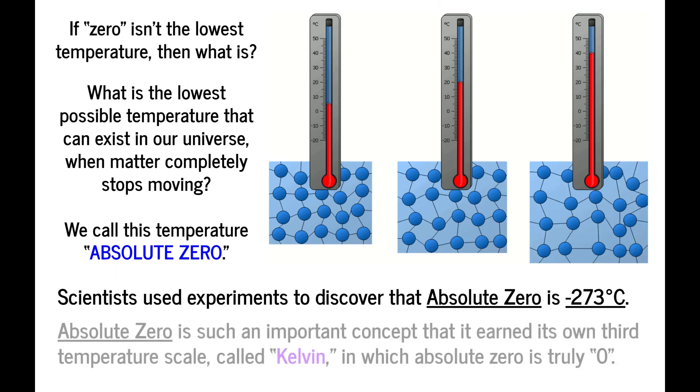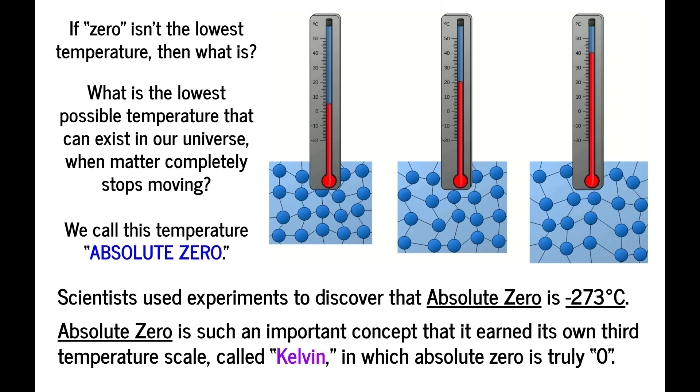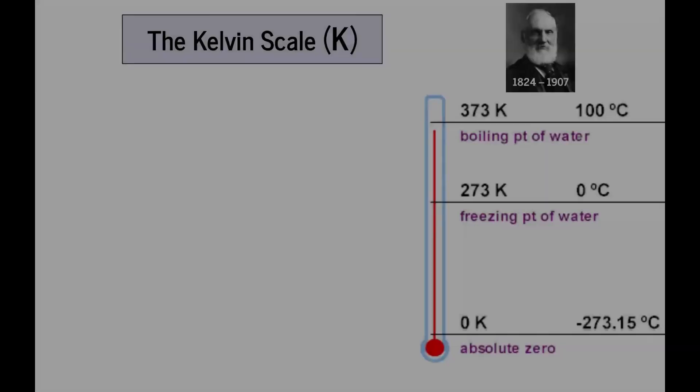Now absolute zero is such an important concept in physics that it earned its own third temperature scale, which is called Kelvin. In this temperature scale, absolute zero is truly zero. So let's talk about the Kelvin scale.